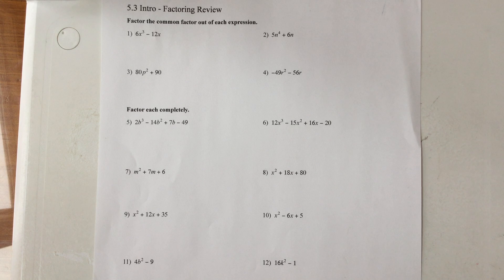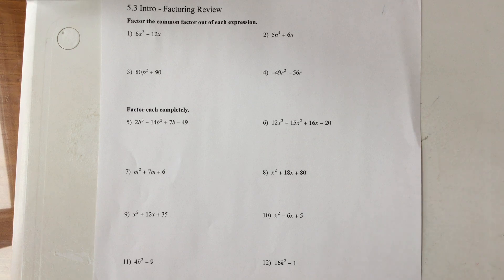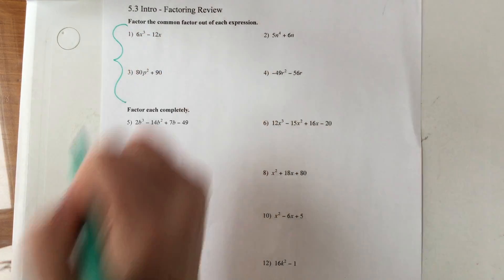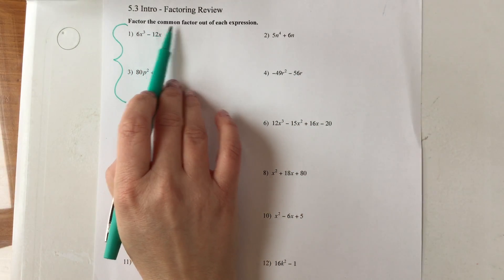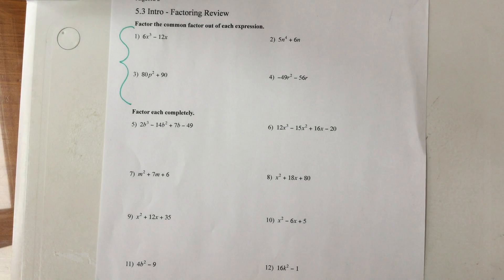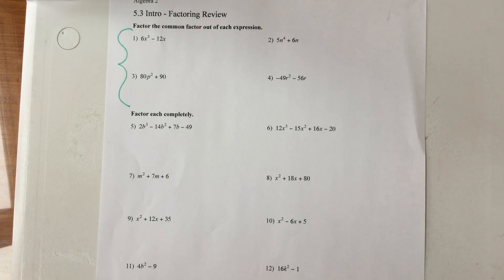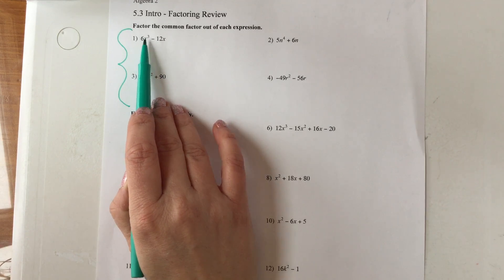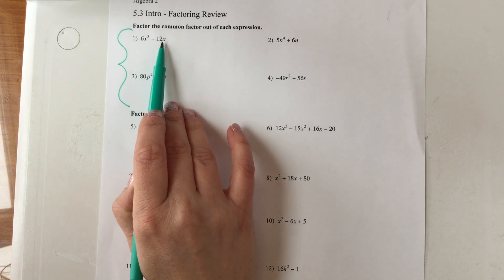For example, up until now we have practiced a property called the distributive property — you know how to multiply something into a set of parentheses. If you are using the factoring technique where you divide out a common factor, think of it as the distributive property going backwards. So here, if I look at 6x³ minus 12x,